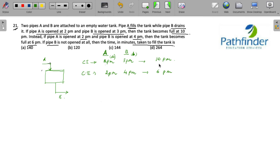From 2 p.m. to 10 p.m., pipe A has been operational for 8 hours, and from 3 p.m. to 10 p.m., pipe B has been operational for 7 hours. So if you take case 1 into account...